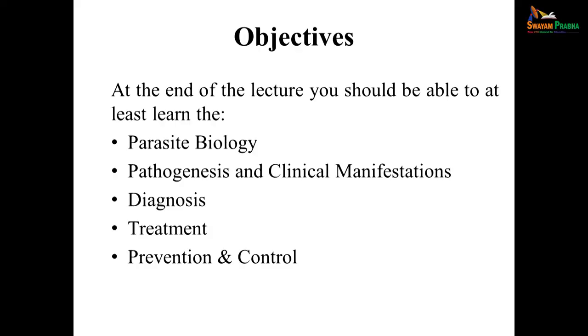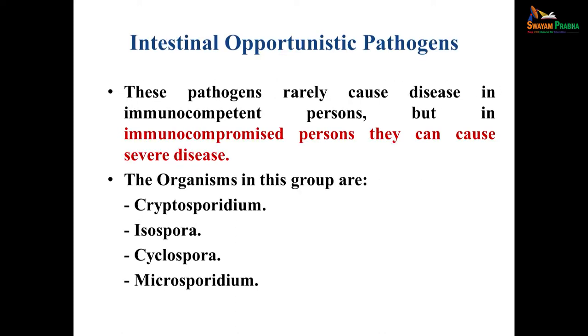We go on to intestinal protozoa part 2, which comprises mainly coccidian parasites and microsporidia. This will help you understand the parasite biology, their pathogenesis and clinical presentation, diagnostic features, treatment, and also how to prevent and control the diseases.